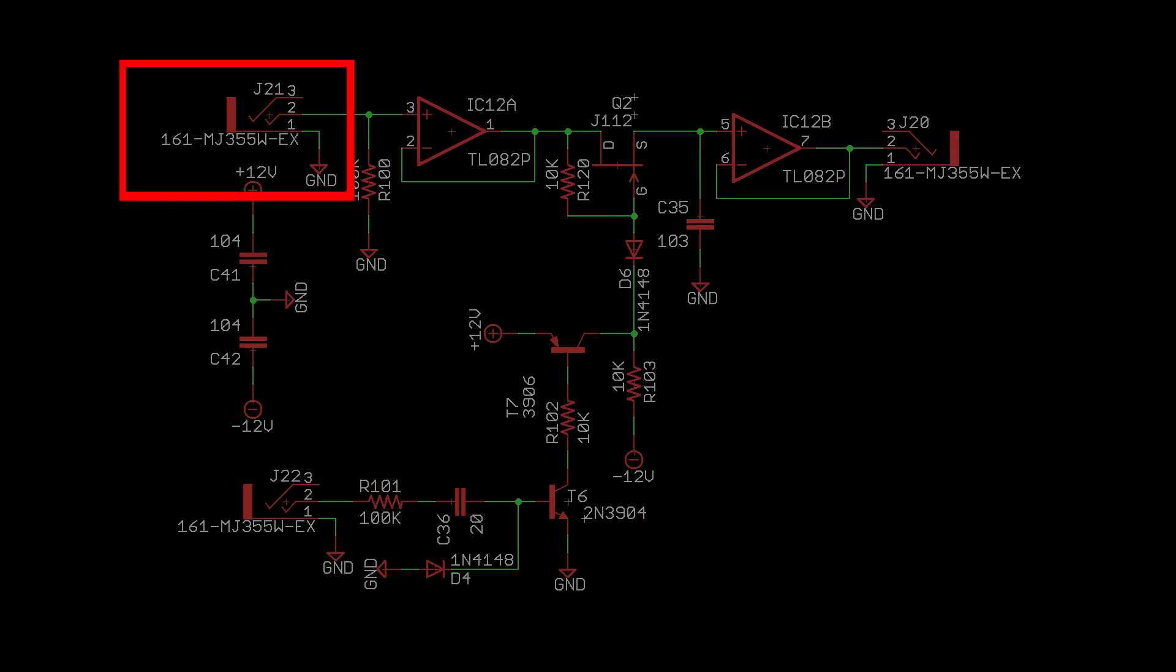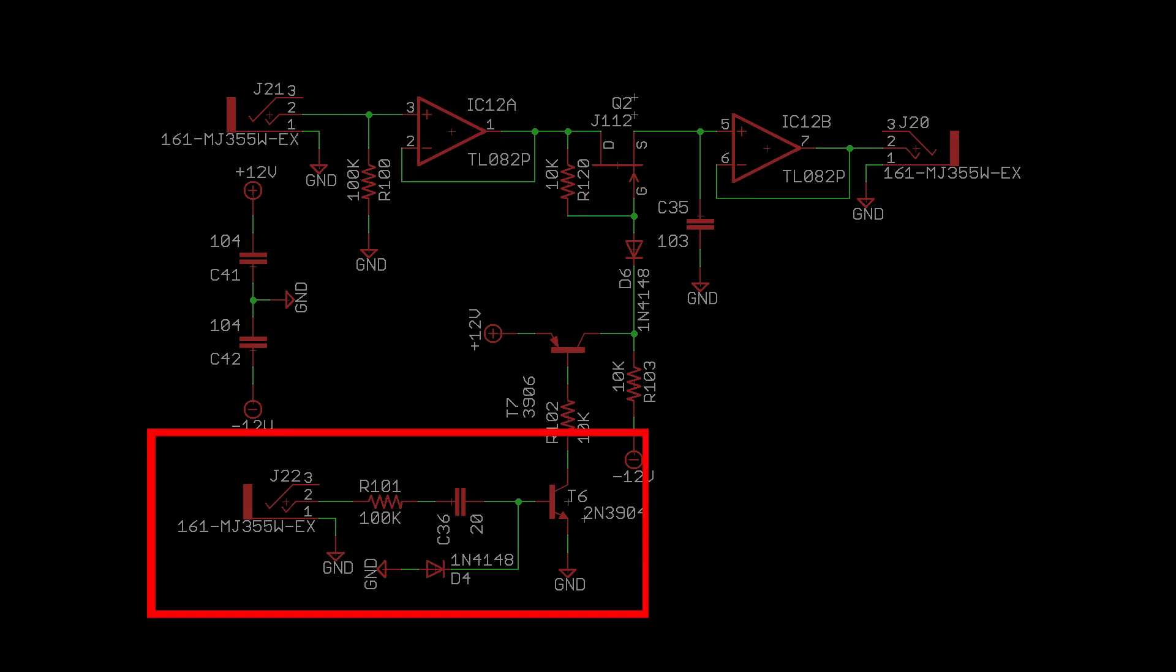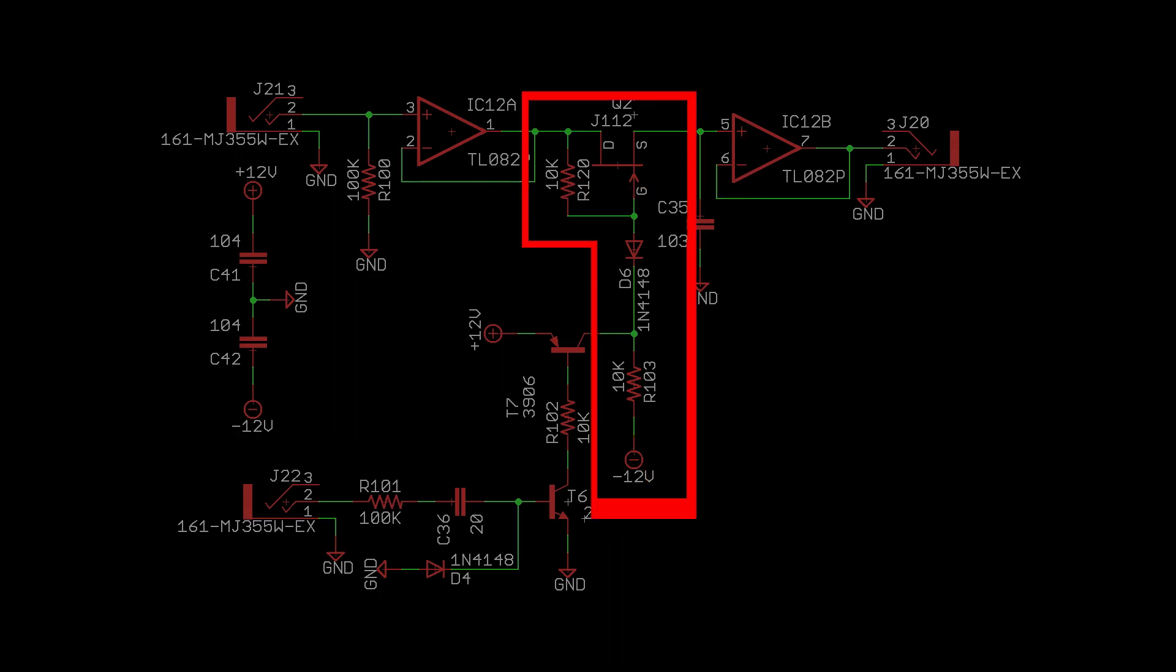The signal comes in here. This op-amp charges the hold capacitor, but only when this JFET is on. The voltage pulse from the trigger circuit turns it on.